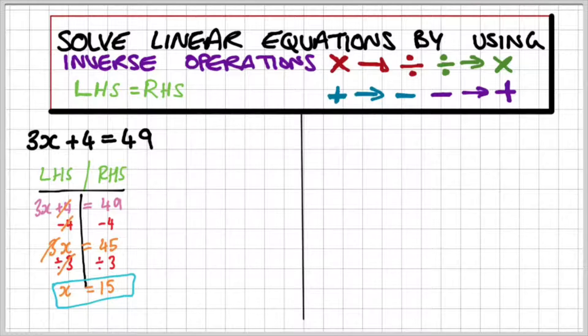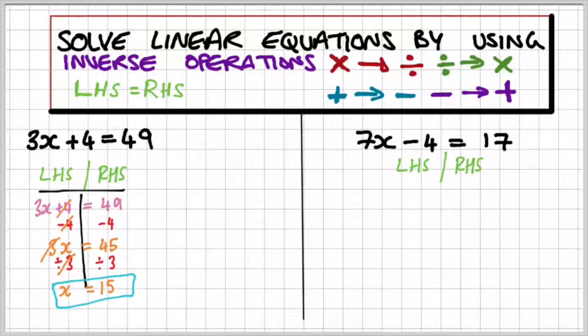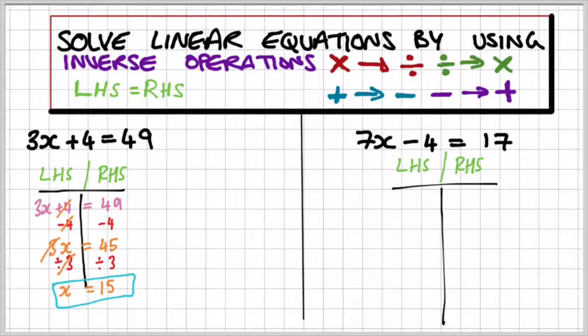Let's look at another example: 7x minus 4 is equal to 17. We'll set up our left-hand side and right-hand side. At this point, I want you to pause the video and try it for yourself.